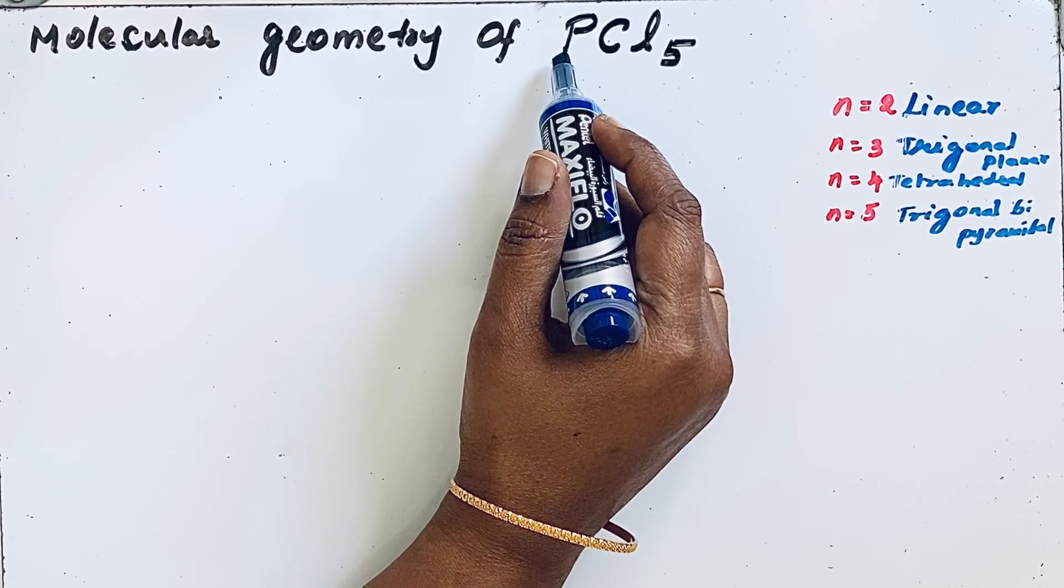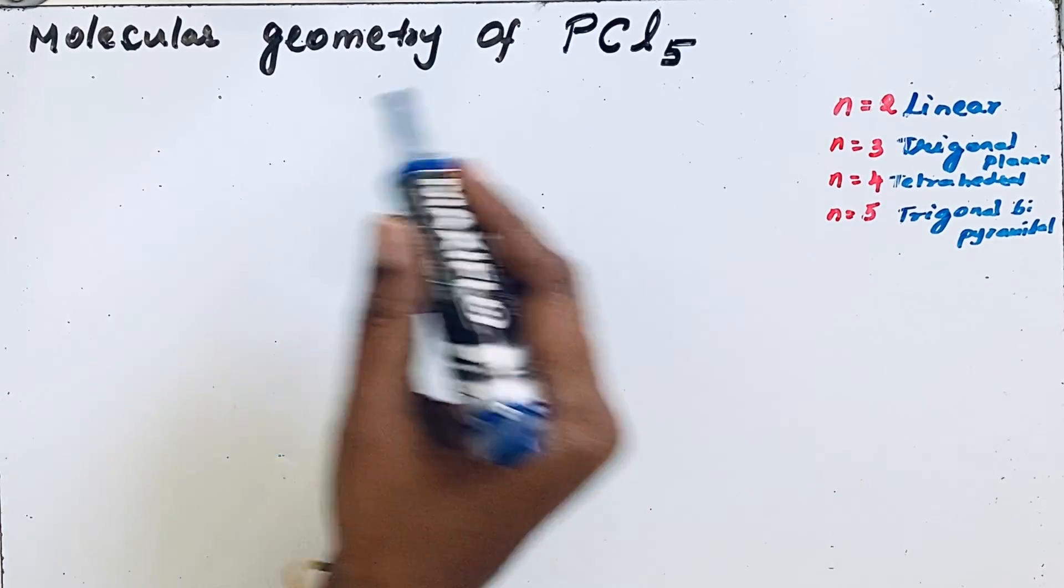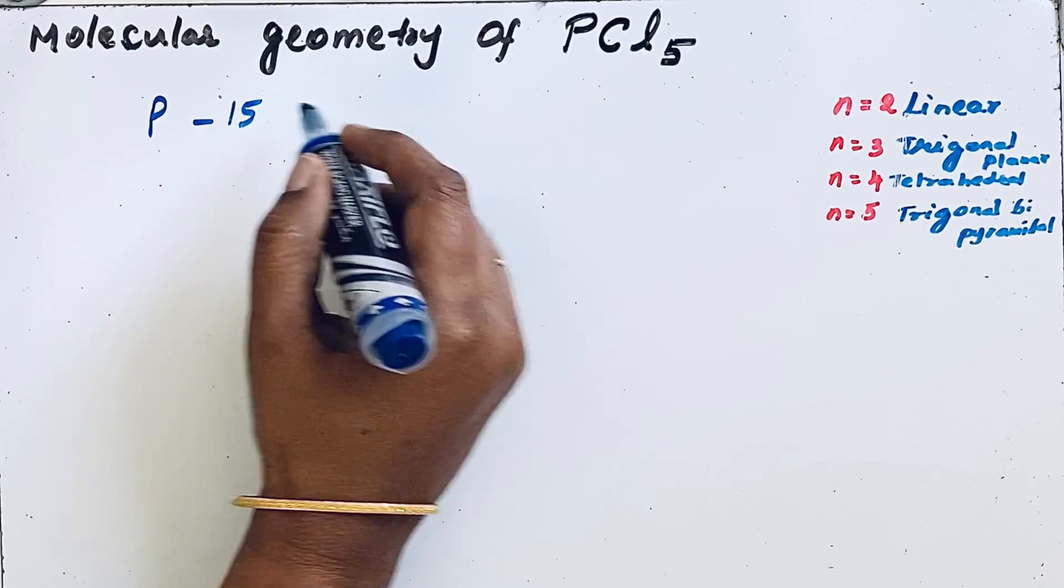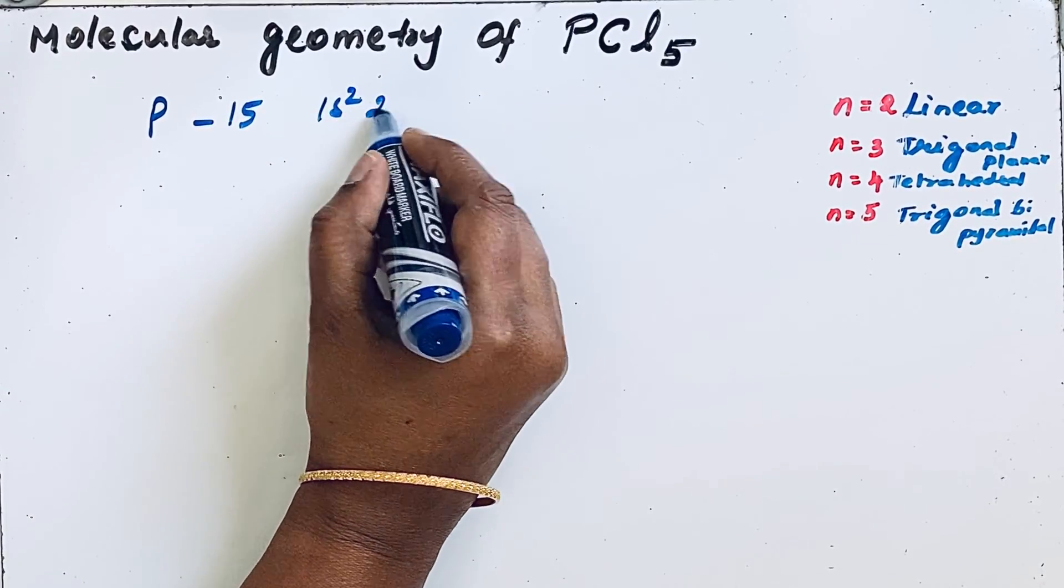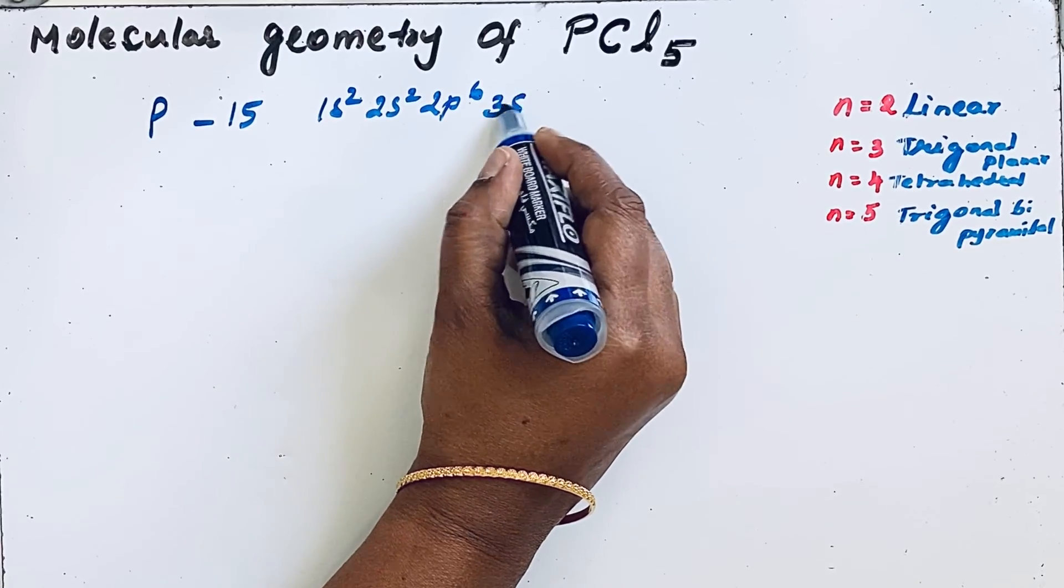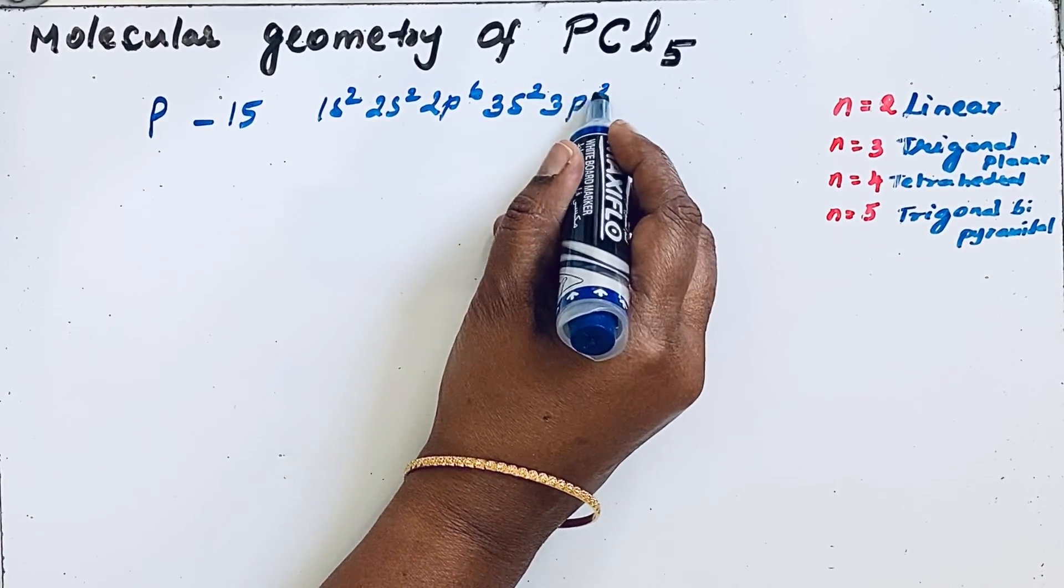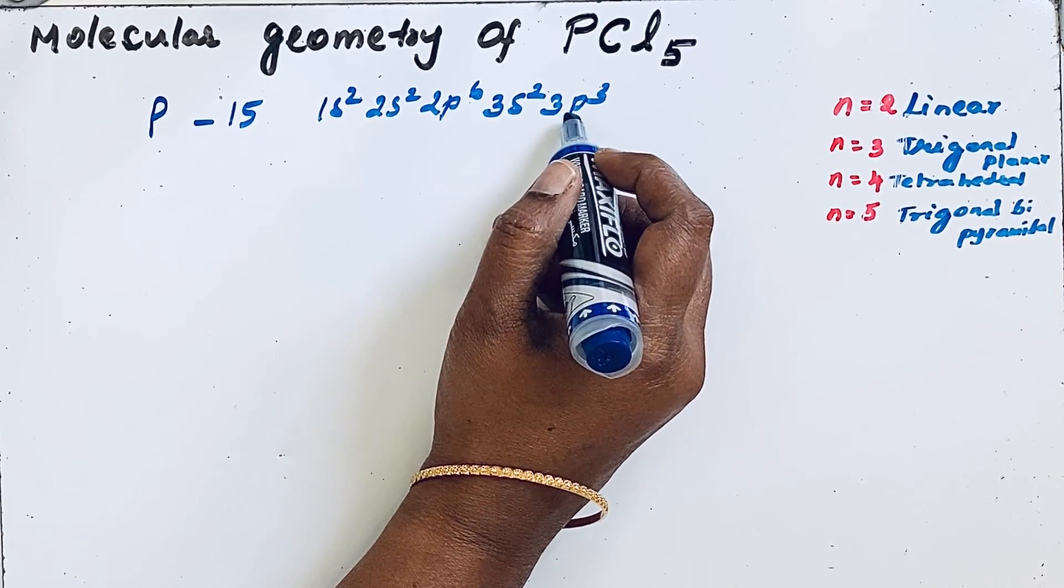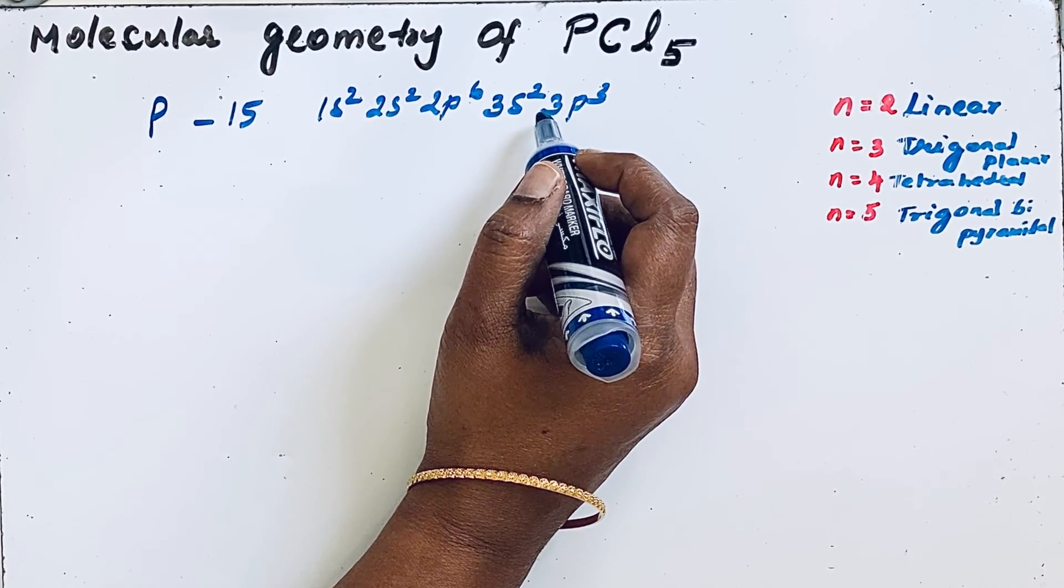We can write the electronic configuration: 1s2, 2s2, 2p6, 3s2, 3p3. This gives us five valence electrons in phosphorus.